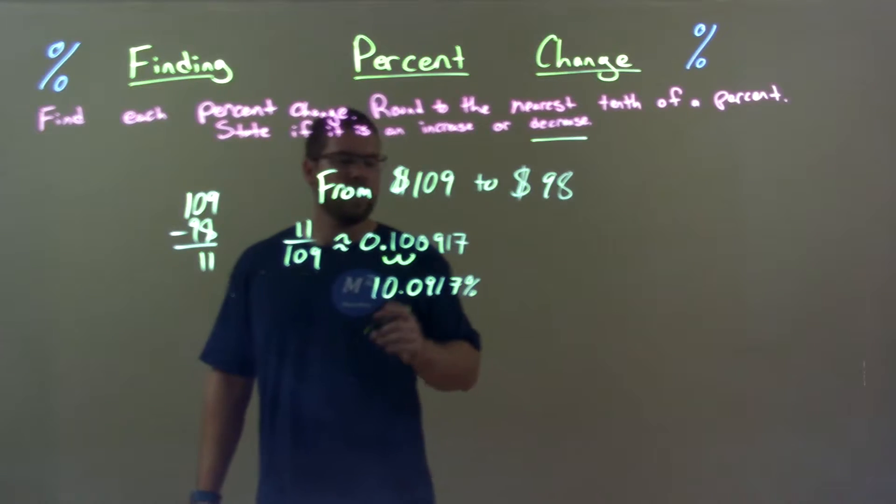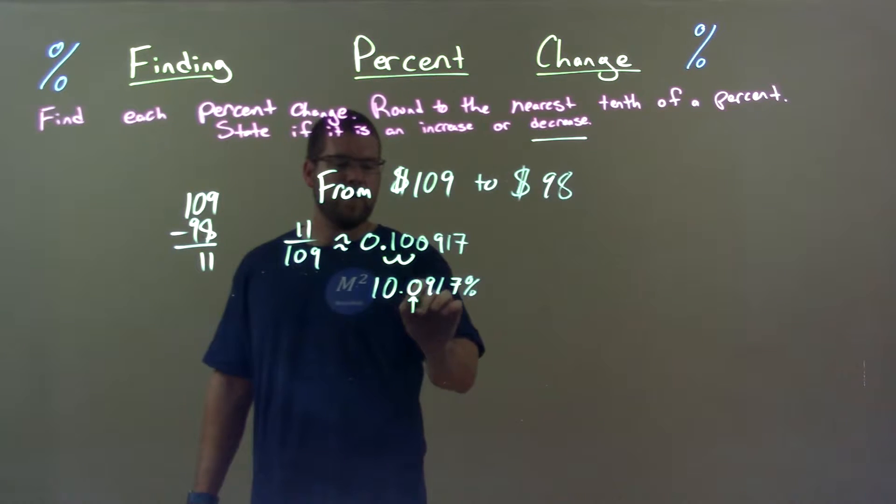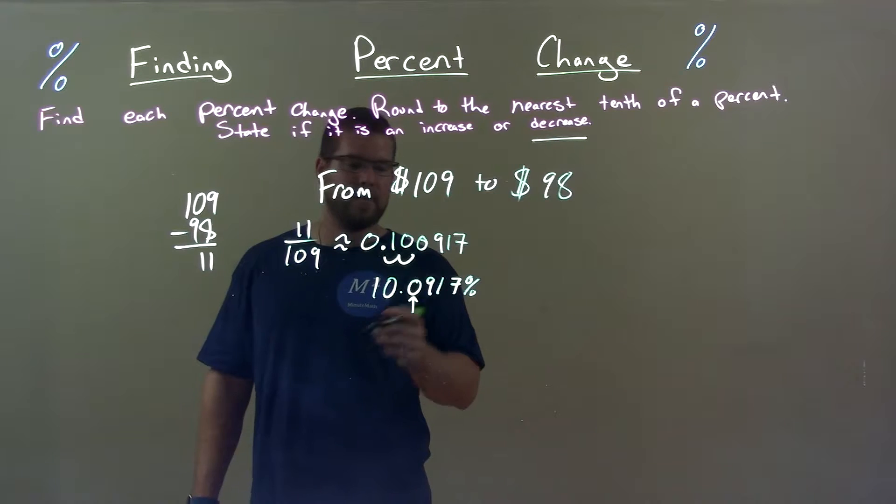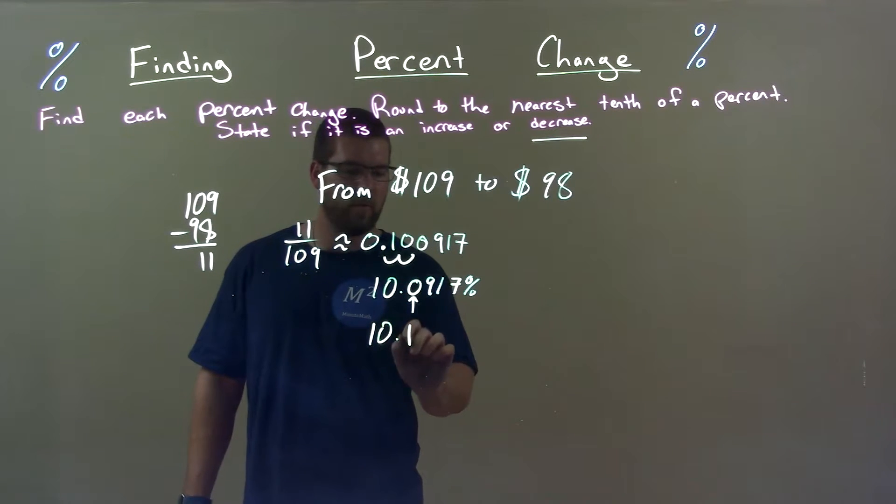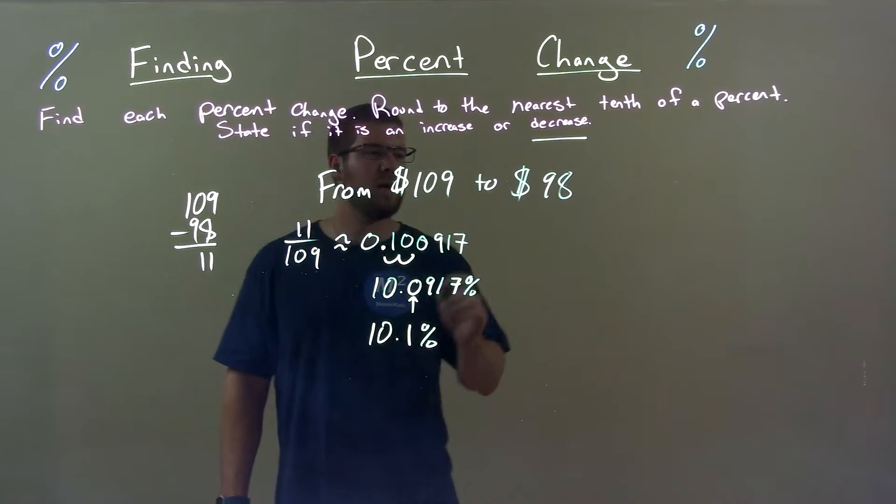Then, right there, we look at the zero, the tenth spot. We've got to round this. Nine causes a zero to go up one, got a one. 10.1 percent right there.